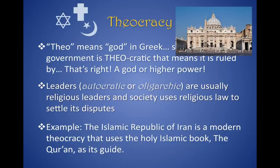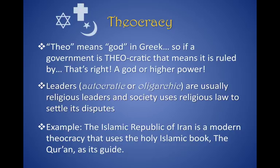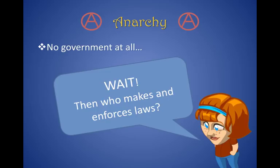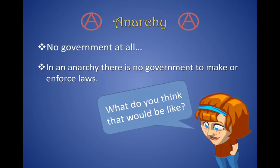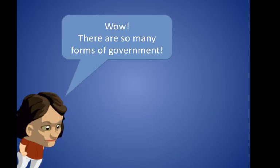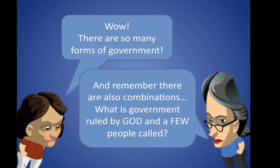Finally, there's one other form of government — actually no government at all. It's called anarchy. In anarchy, there is no government to make or enforce laws. It's basically every person for themselves. As you can see, there are lots of different kinds of governments, and there are also combinations of these things. For example, what is government ruled by God and a few people called?